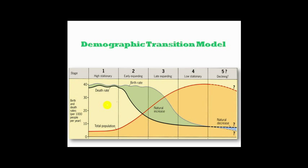India was in this phase until 1920. Currently, no other countries are in this stage except a few tribes in the Amazon area. The reasons for this high stationary stage include: very little access to birth control; very high infant mortality rates, so parents wanted more children to compensate for loss of life; children were used as productive workforce in agriculture; high death rates due to famine, disease, war, and lack of public health facilities; and large families due to religious and cultural beliefs.